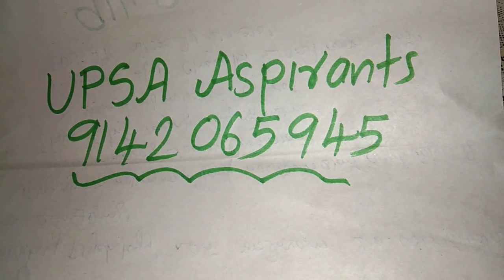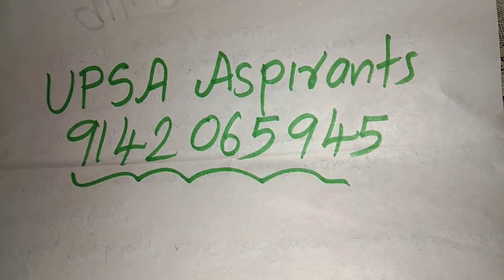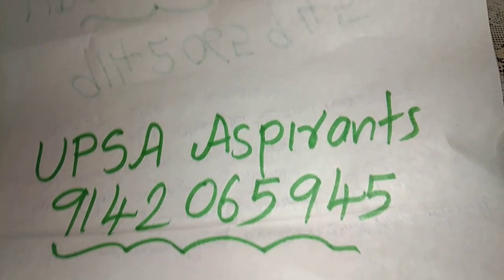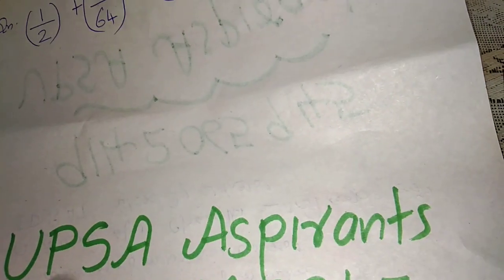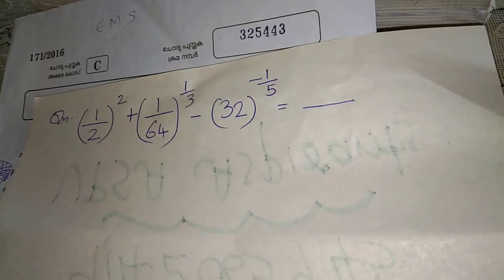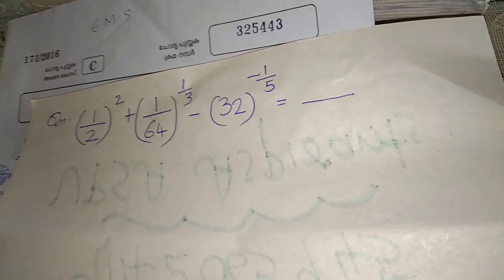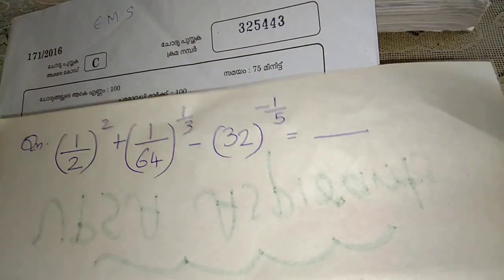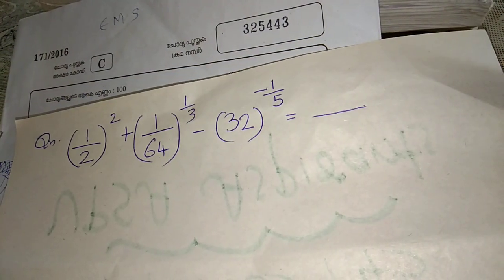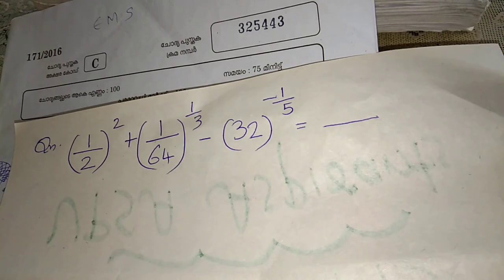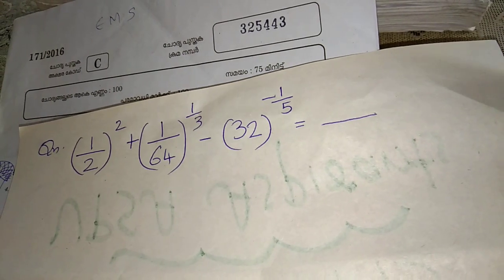Mathematics is 10 or 15 marks. We are going to discuss a problem: 1 by 2 square plus 1 by 64, all raised to 1 by 3, minus 32 raised to minus 1 by 5, equals dash.